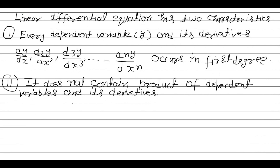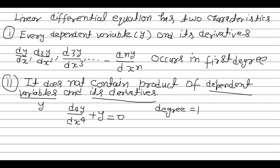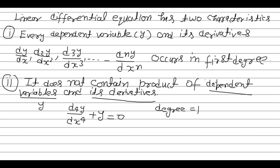Let us see some examples of linear differential equations. I am writing d4y/dx4 + y = 0. This is an example of a linear differential equation because the degree is 1 and it does not contain the product of dependent variables — that is y — and its derivatives. So even though it has an order of 4, this is a linear differential equation.